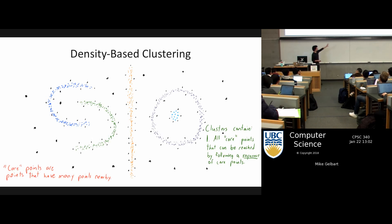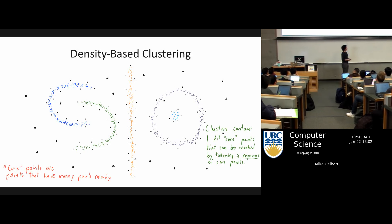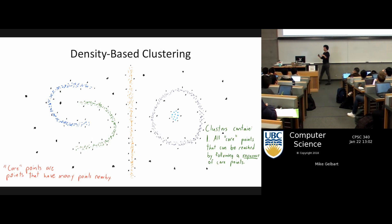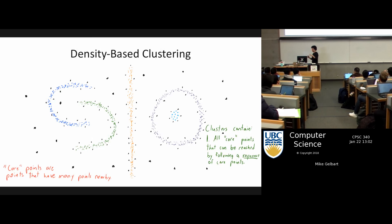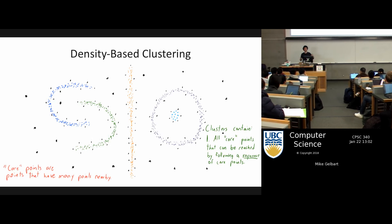The stuff on the left looks sort of like what we had in the notebook last time. The stuff on the right is kind of interesting in that we have one cluster sort of wrapped around another cluster, which we wouldn't have with k-means.